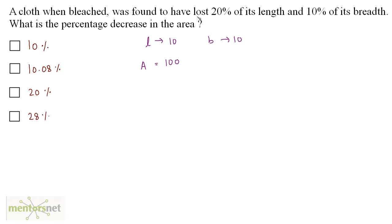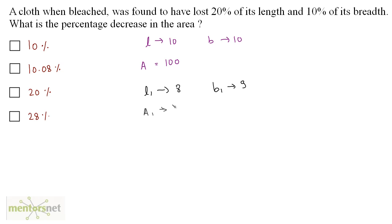It has been given that the cloth, when bleached, lost 20 percent of its length. So the new length is 20 percent less than 10, which is 8 (10 minus 2). The new breadth is 10 percent less than the old breadth, which is 10 minus 1, that is 9. The new area equals 8 times 9, which is 72.